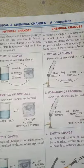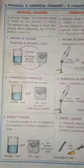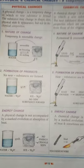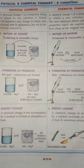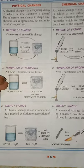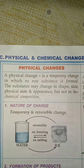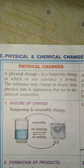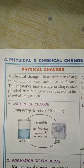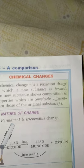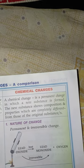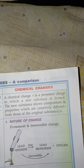We will move on to the difference between chemical and physical change. These points are necessary and might come as a question — differentiate between physical and chemical change with respect to definition, nature of change, formation of products, or energy change. A physical change is a temporary change in which no new substance is formed, and the substance may change in shape, size, physical state, and appearance but not in its chemical composition. A chemical change is a permanent change in which a new substance is formed with different properties and features compared to the original substance.